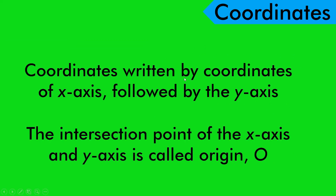Coordinates are written by the x-axis followed by the y-axis, and the intersection point of the x-axis and y-axis is called the origin. Normally we write it as O. Jadi koordinat ini ditulis dimulai dengan paksi x, diikuti dengan paksi y. Kemudian di titik persilangan antara paksi x dan paksi y ini kita panggil sebagai pusat ataupun origin.